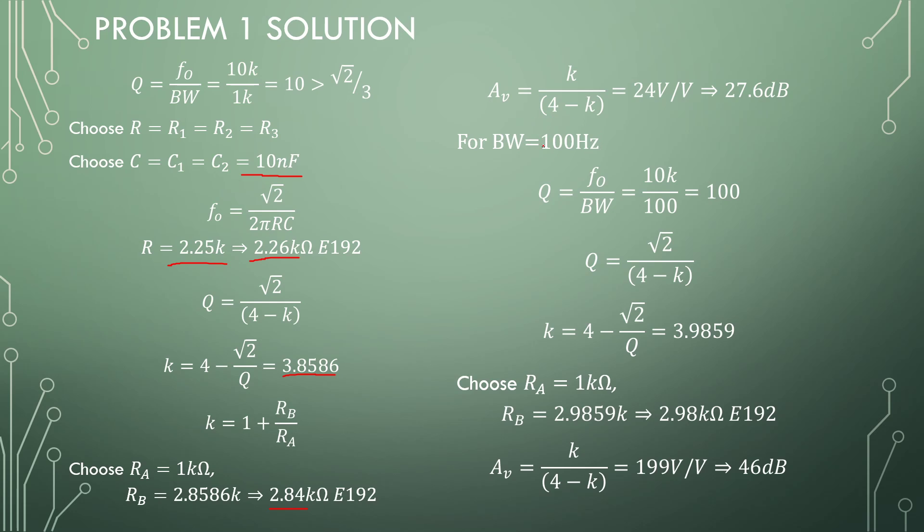Now for the bandwidth of 100 hertz, we redesign the Q-factor, and this will only have effect on K that we have here. So there is a marginal difference between the two gains. Only RB gets adjusted, and that becomes 2.98 kilo-ohms.